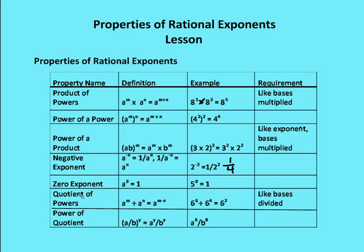Quotient of powers: if I am dividing two values that have the same base but different exponents, I can simply subtract the exponents and keep the base the same. So 6 to the 6th divided by 6 to the 4th leaves me with 6 squared. I just subtract 4 from 6 to get 6 squared.